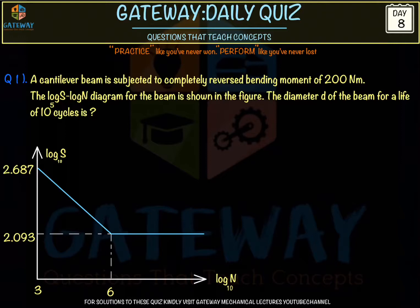Hi everyone, welcome to Gateway Lectures. Here are the solutions for Quiz Day 8. The first question is about machine design: a cantilever beam is subjected to completely reversed bending moment — a type of completely reversed fatigue loading — and the bending moment value was given as 200 Newton-meter.